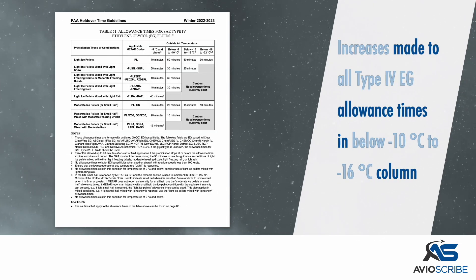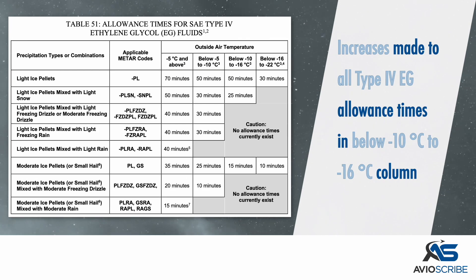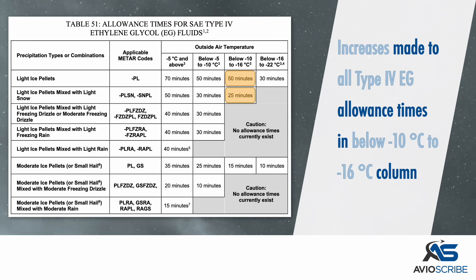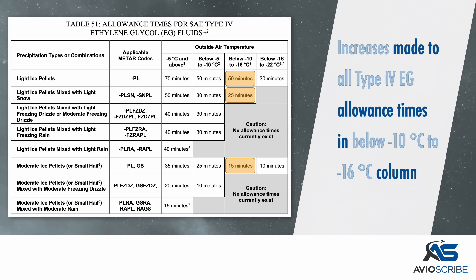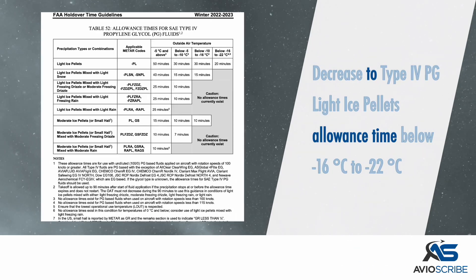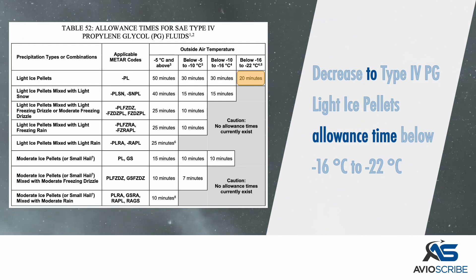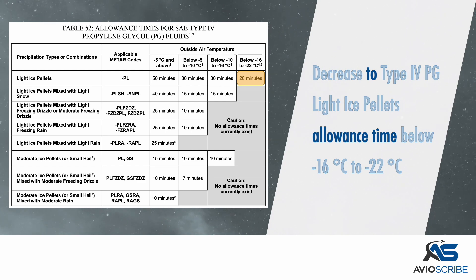Increases have been made to all the Type 4 ethylene glycol allowance times in the below minus 10 degrees Celsius to minus 16 degrees Celsius column. A decrease has been made to the Type 4 propylene glycol light ice pellet's allowance time below minus 16 degrees Celsius to minus 22 degrees Celsius.